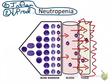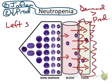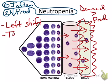With inflammatory neutropenia, demand exceeds production. To help identify inflammatory neutropenia, you look for a left shift, which means there will be band neutrophils in circulation or earlier forms. You can also look for signs of neutrophil toxicity.